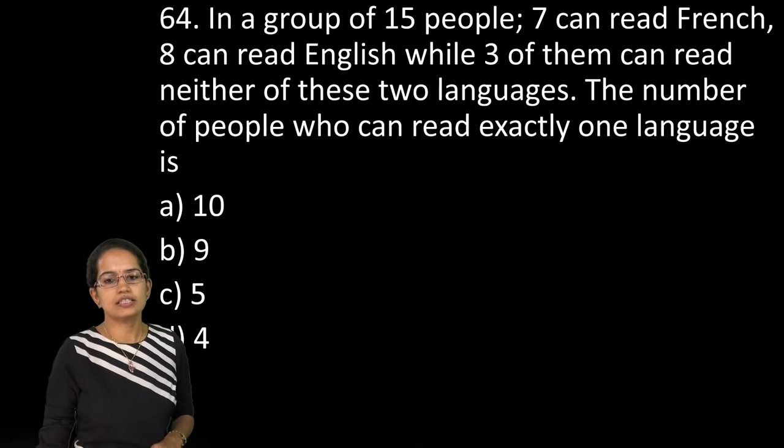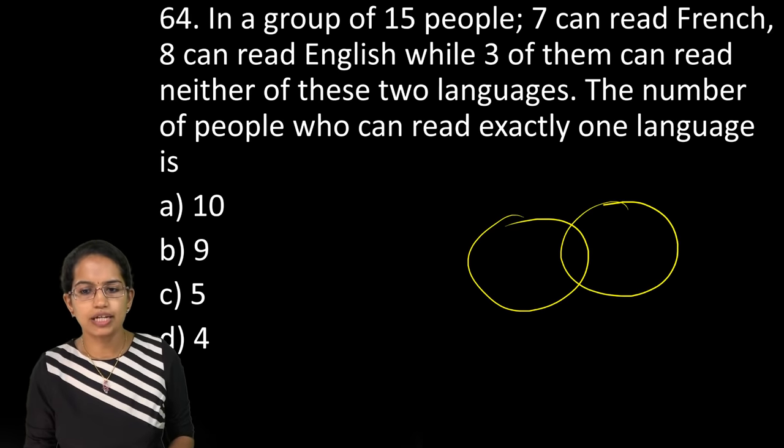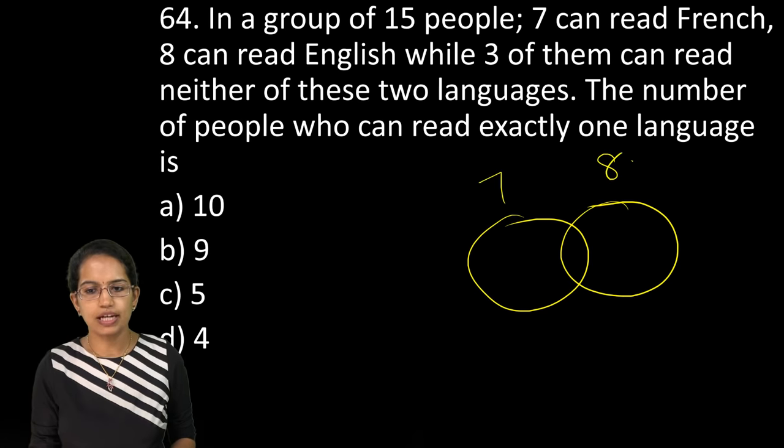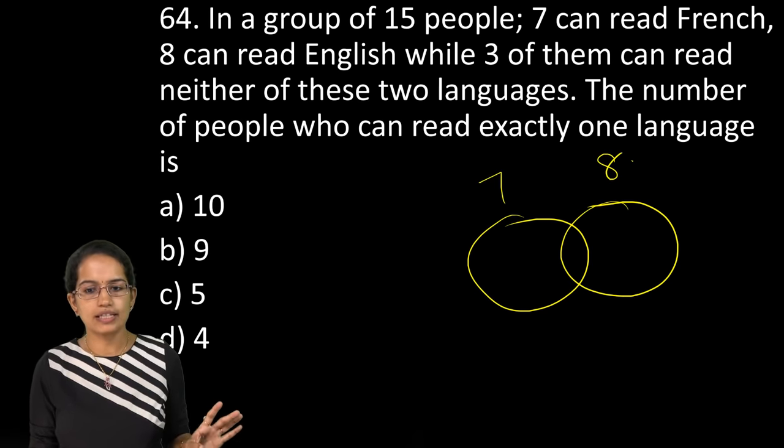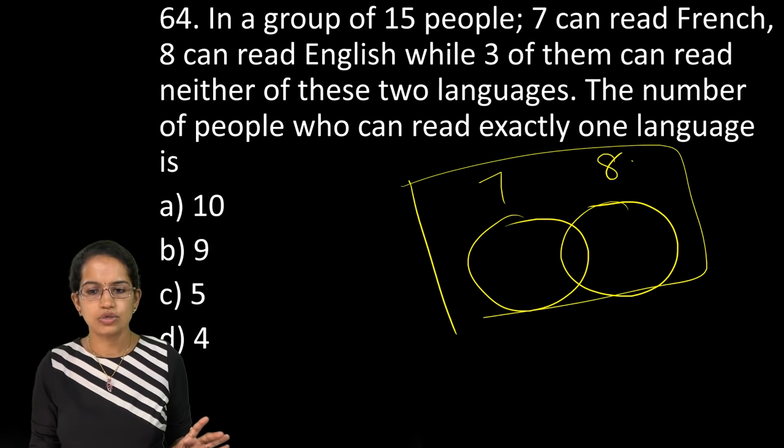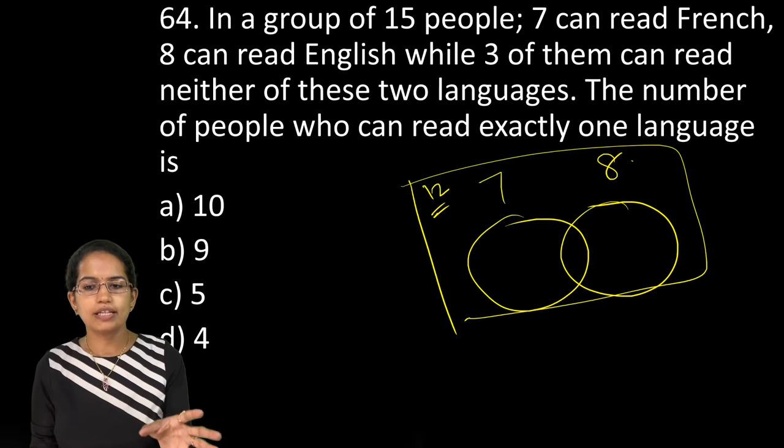The next is 15 group of people. 7 can read French, 8 can read English. So 7 and 8. Out of this 15, 3 can read neither. So how many left here? So you have 12 left. Out of this 12 now, together both of those read how much?